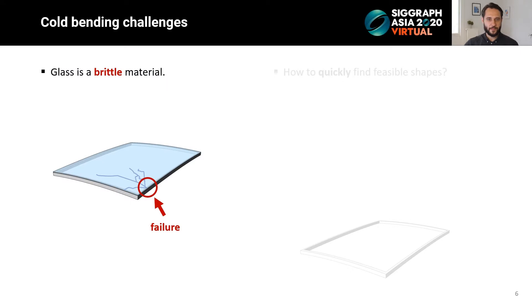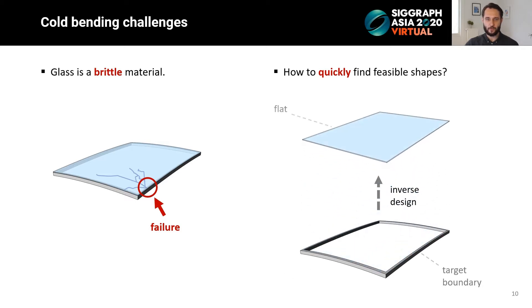Glass is a brittle material and its mechanical properties make design exploration of cold-bend glass panels challenging. Another challenge is that for a given target boundary, computing the cold-bend glass panel conforming to that boundary is an inverse design problem, since the rest shape of the panel is a priori unknown. This is usually a computationally expensive process which prohibits interactive form finding during the design process.